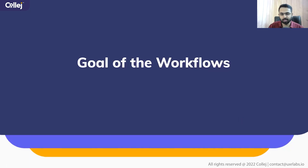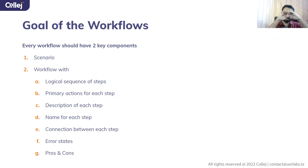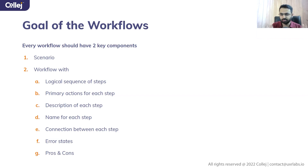What are the important components of a workflow? The first one is scenario. The second one is the workflow itself — a logical sequence of steps and primary actions for each step that the user needs to perform to get to the next level. Then a description for each step: what are all the things a user can do. A name for each step — this helps measure the scope of work. You connect from which action to which phase, plan for all errors, and evaluate pros and cons of each variation.